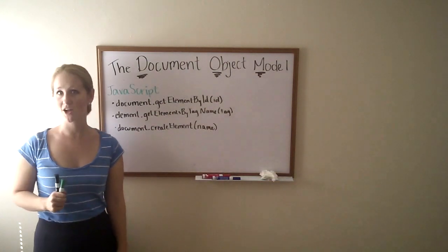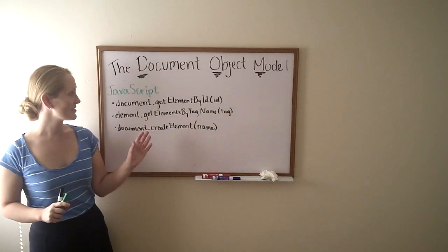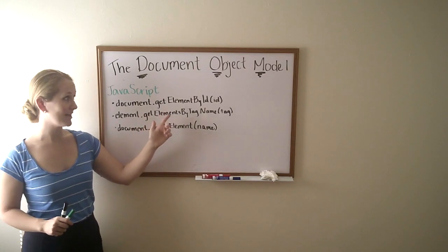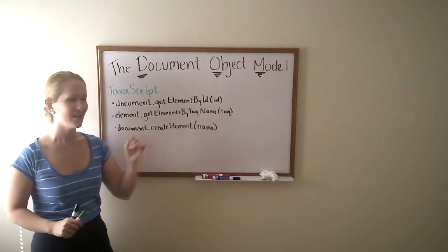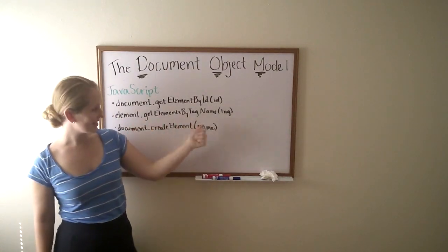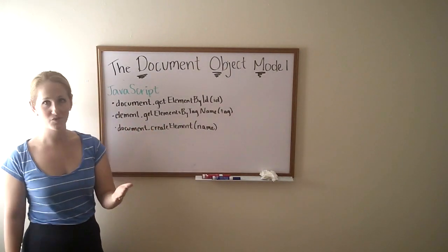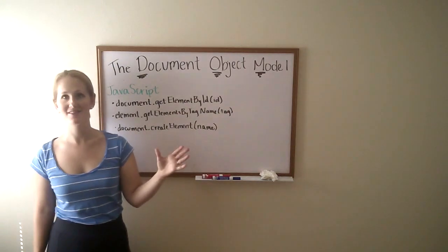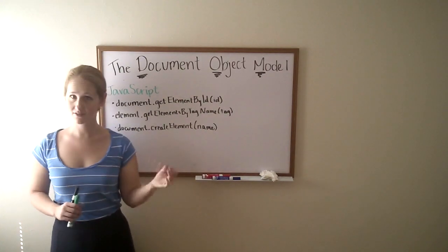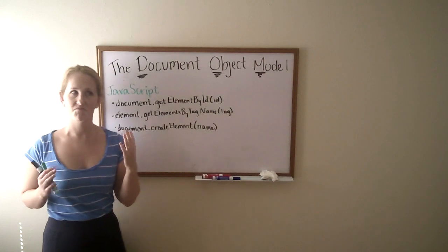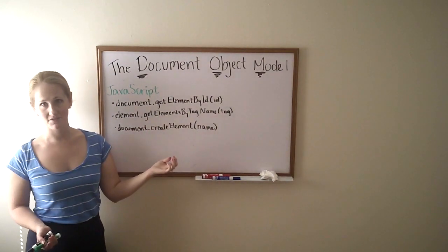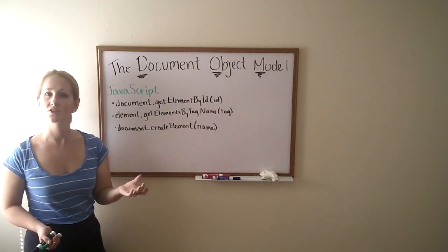Let's talk about some examples of Document Object Model manipulation. These examples are pure vanilla JavaScript. Document.getElementById, and then the ID, is something that maybe you've seen before in some of the earlier challenges. Element.getElementsByTagName is another example, and if you want to create something totally new, document.createElement, and then the name of that element. You don't have to remember this — this is not a lesson on how to manipulate the document object model, just how it's possible, so you understand the concept and can connect those dots a little bit better.